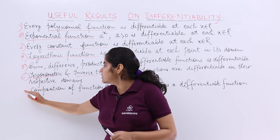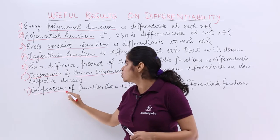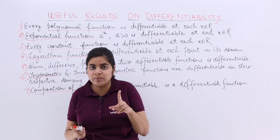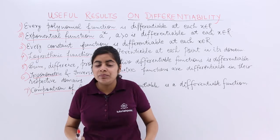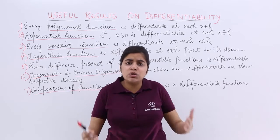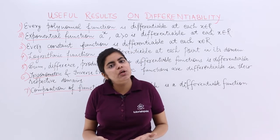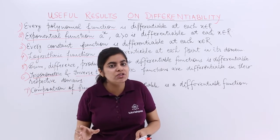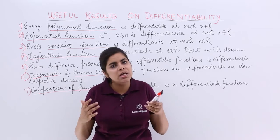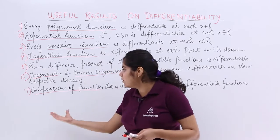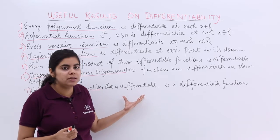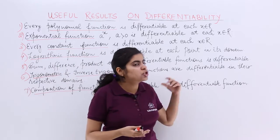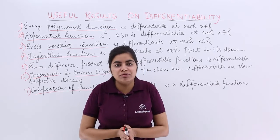Point number 7 is about the composition of functions. Suppose I have one differentiable function and another differentiable function — the composition of these two differentiable functions will also be differentiable. So if function one is differentiable and function two is differentiable, their composition is also differentiable, giving us another differentiable function.